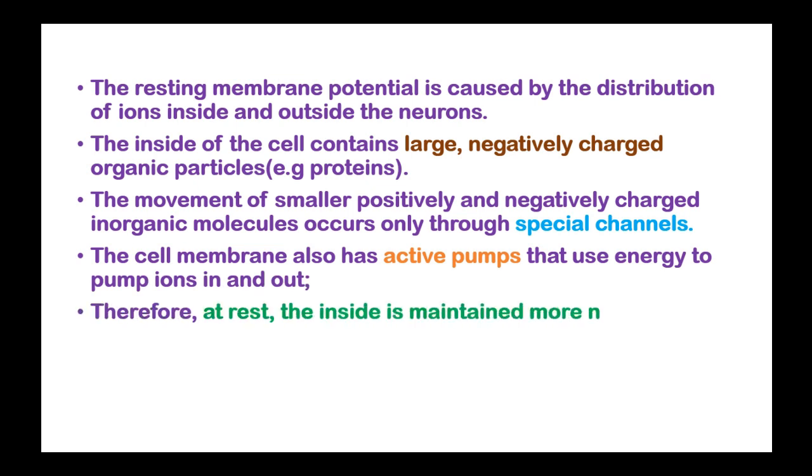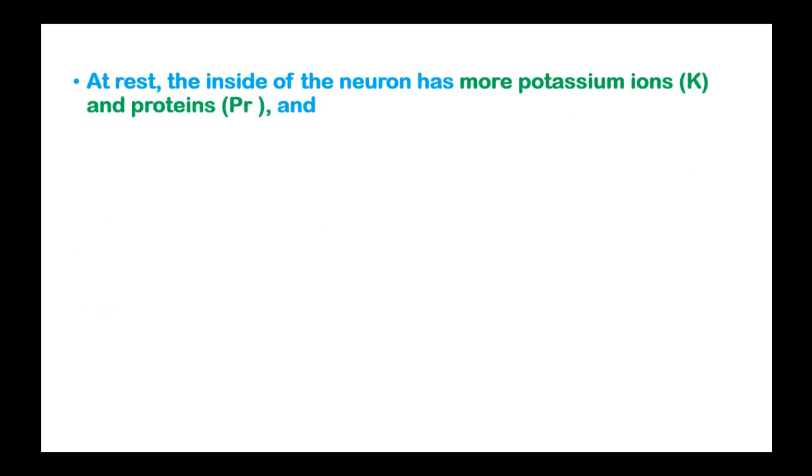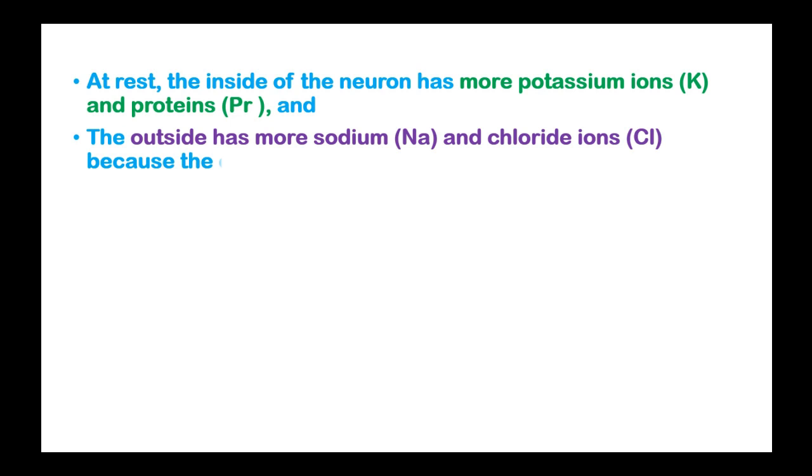Therefore, at rest, the inside is maintained more negative than the outside. At rest, the inside of the neuron has more potassium ions and proteins, and the outside has sodium and chloride ions because the cell membrane is not freely permeable to the ions.